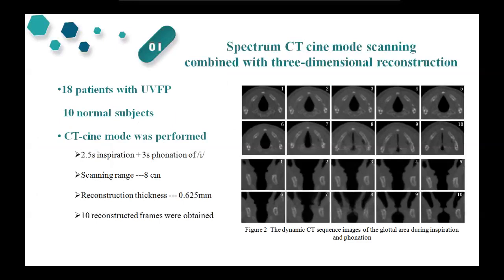Methods: We used dynamic CT combined with three-dimensional reconstruction technology to achieve real-time imaging of the larynx during inspiration and phonation. 18 patients with unilateral vocal fold paralysis and 10 normal subjects were studied. The CT protocol was performed with 2.5 seconds expiration followed by phonation for about 3 seconds until the end of the breathing cycle. The scan range was about 8 cm, including from the epiglottis cartilage to the first tracheal ring. The reconstruction thickness was 0.625 mm, and 10 reconstructed frames were obtained, as shown in Figure 2.